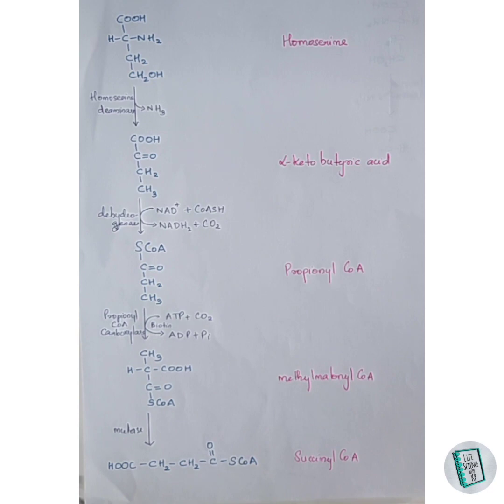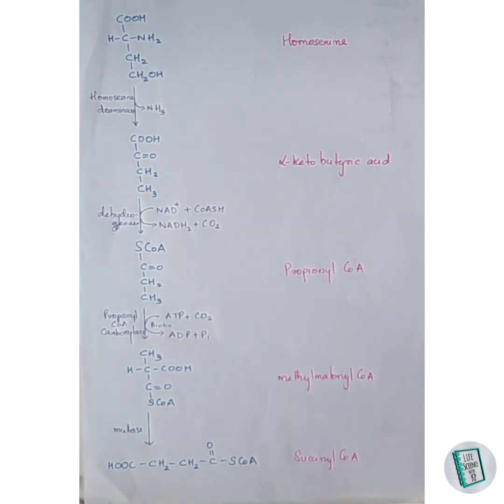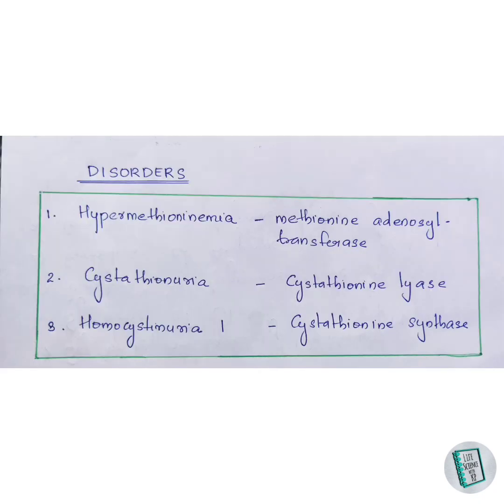Succinyl-CoA then enters the TCA cycle for further reactions. Thus, through a series of nine reactions, methionine is degraded to succinyl-CoA, which in turn participates in the synthesis of glucose. This concludes the degradation of methionine.